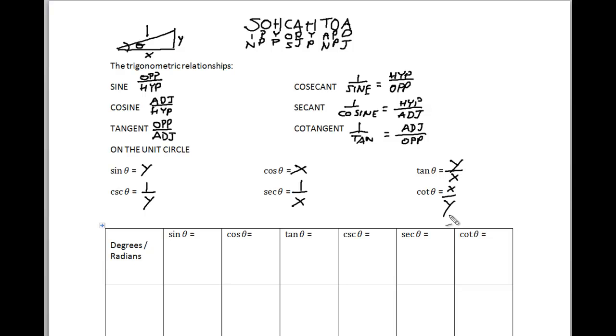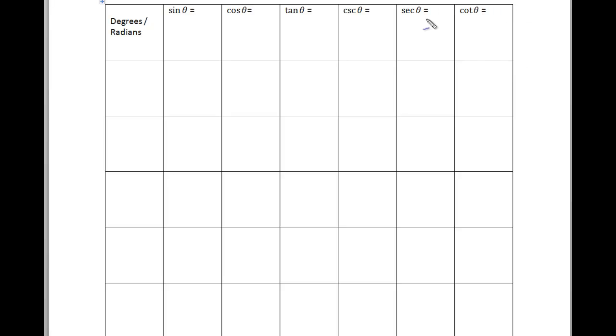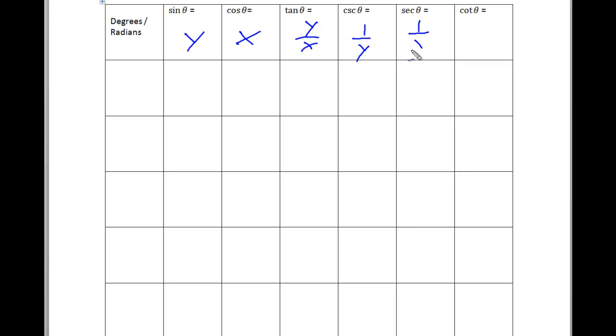Now what this allows me to do is fill in a chart. To review: sine of theta is y, cosine of theta is x, tangent is y over x, cosecant is 1 over y, secant is 1 over x, and cotangent is x over y.